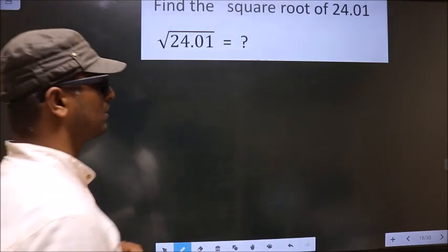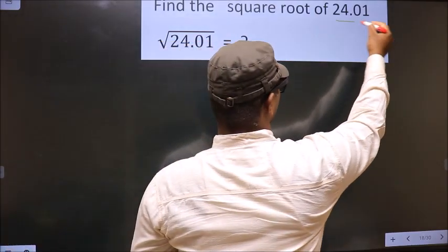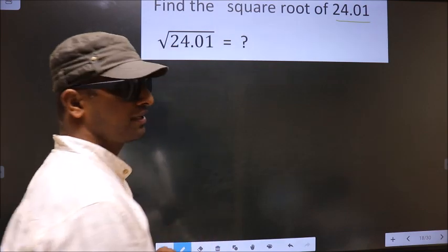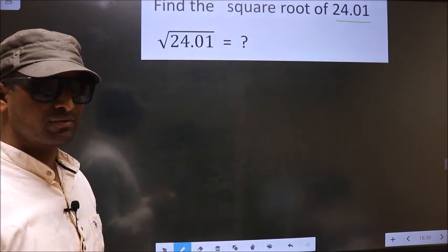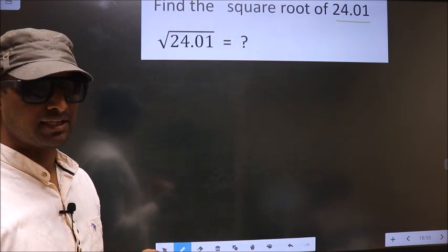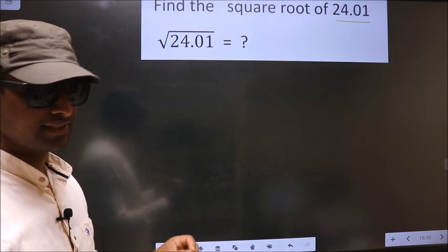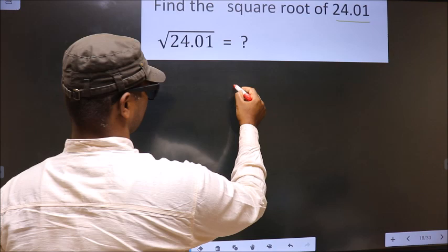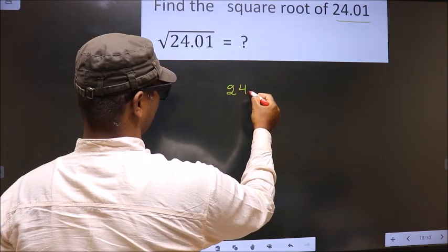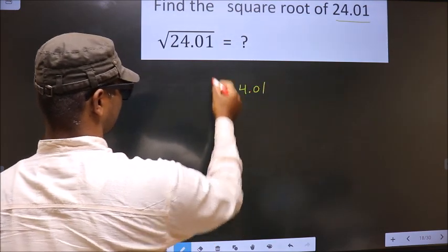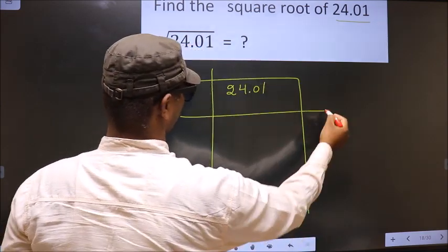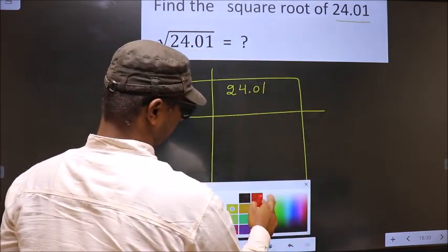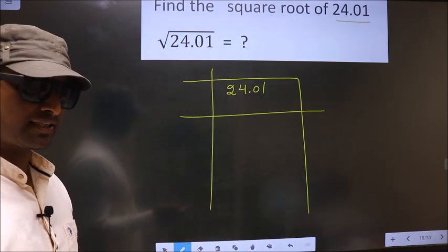Find the square root of 24.01. To find the square root by long division method, first we should frame it in this way. That is 24.01.